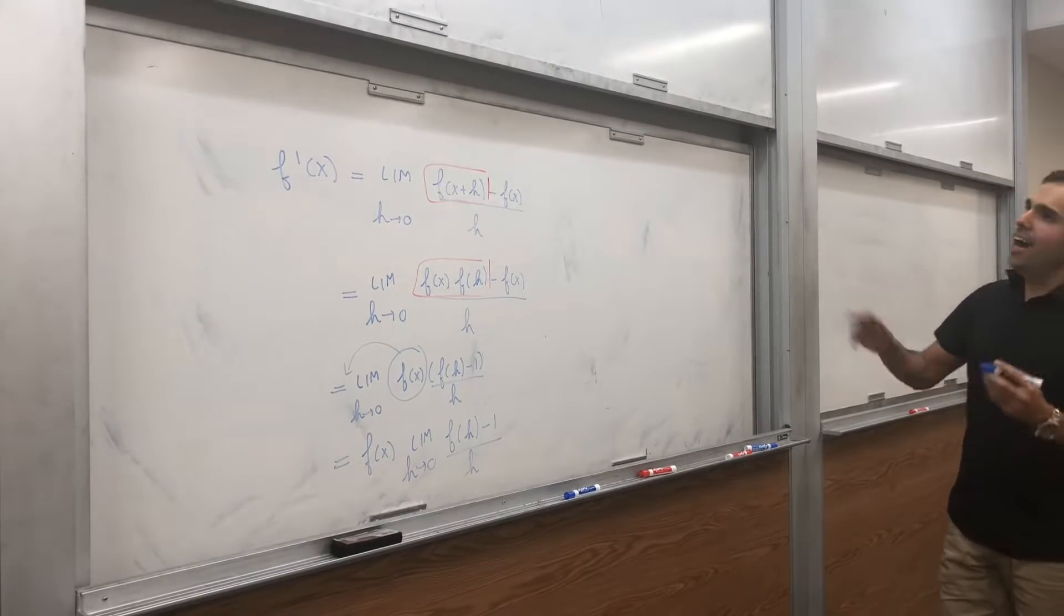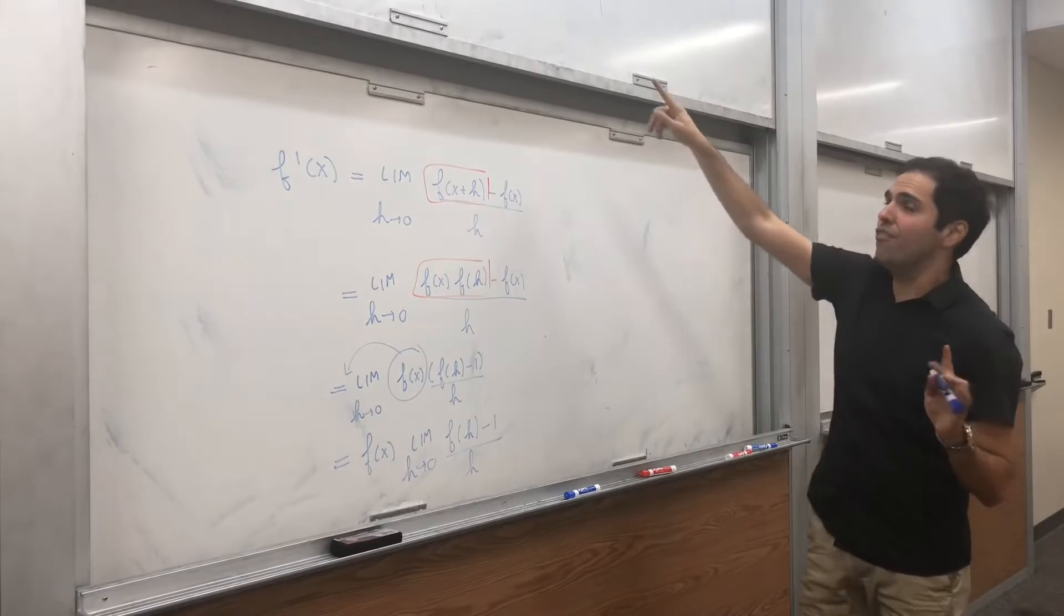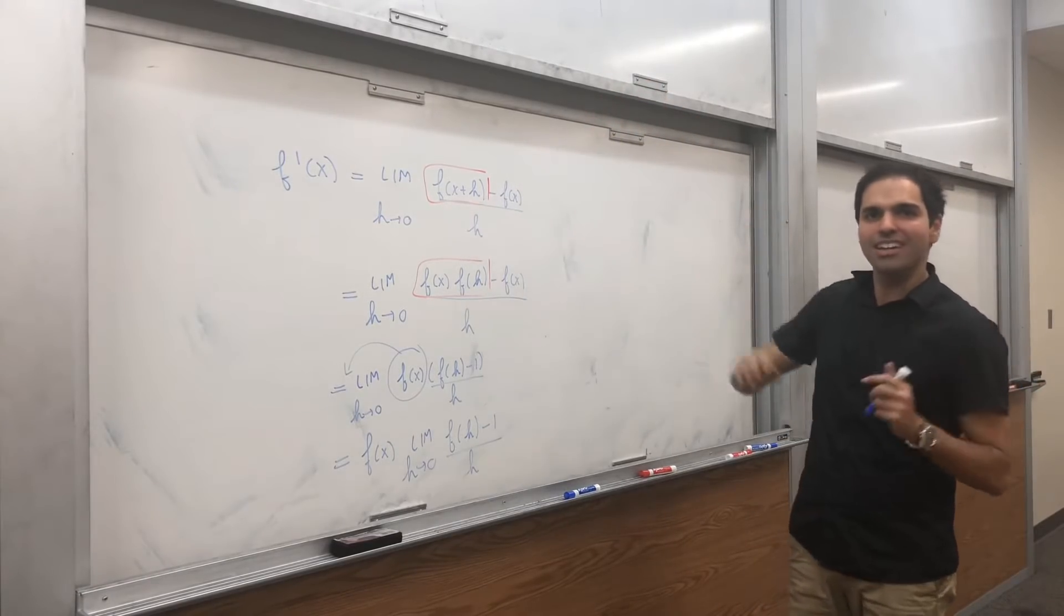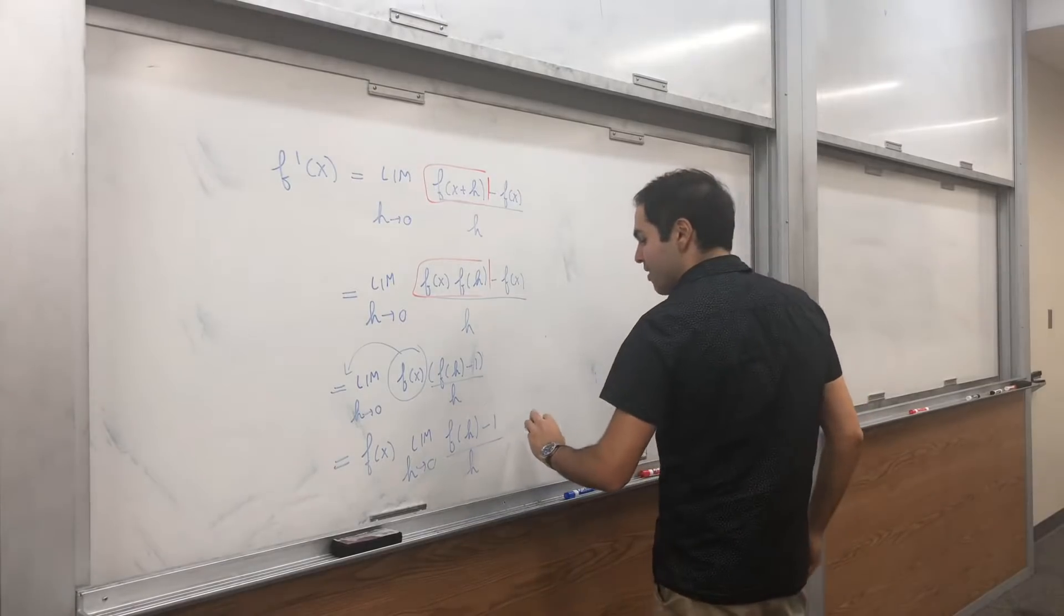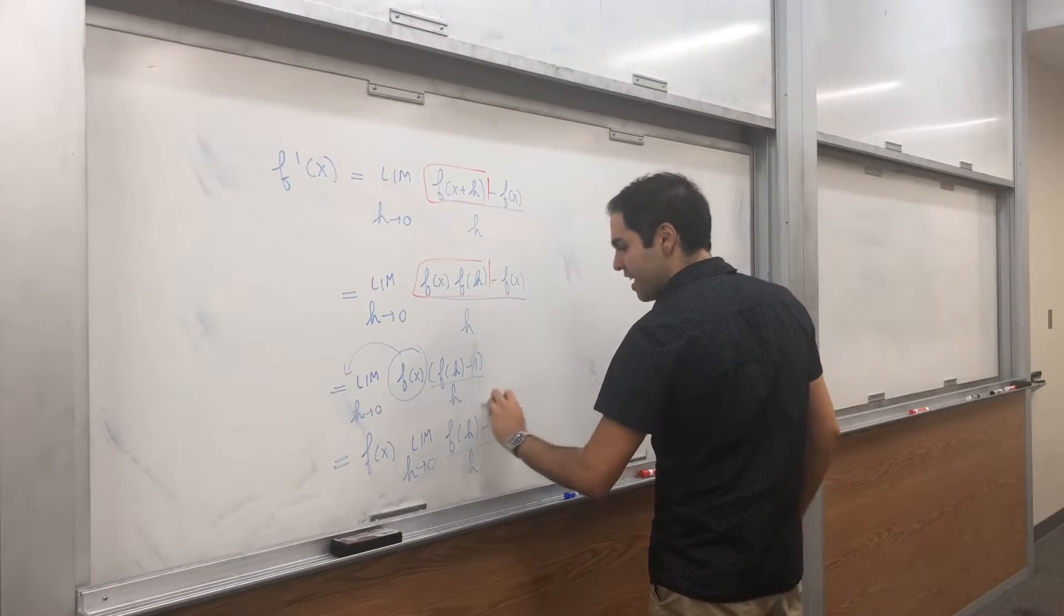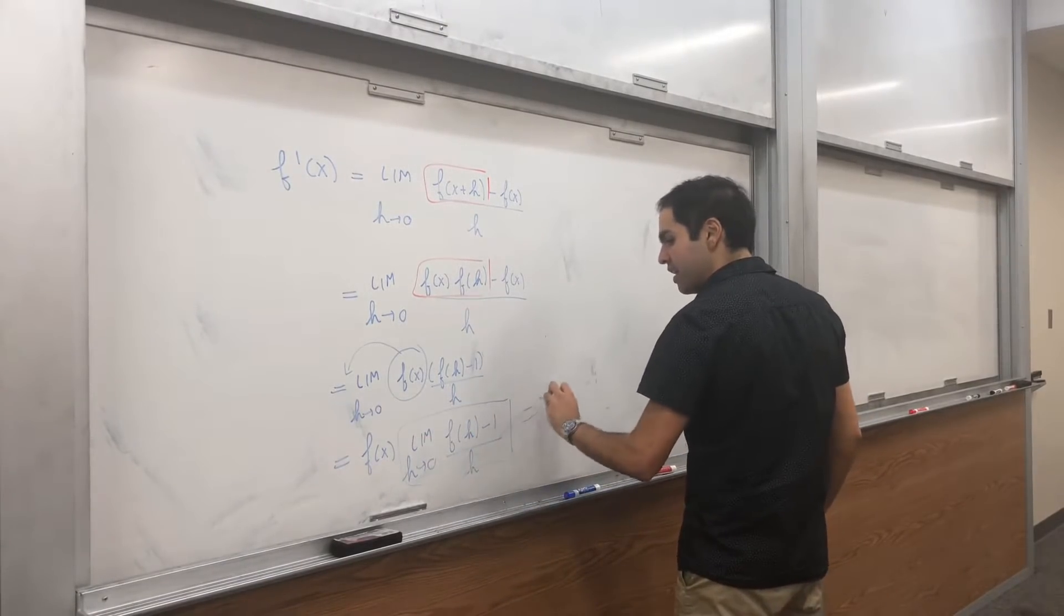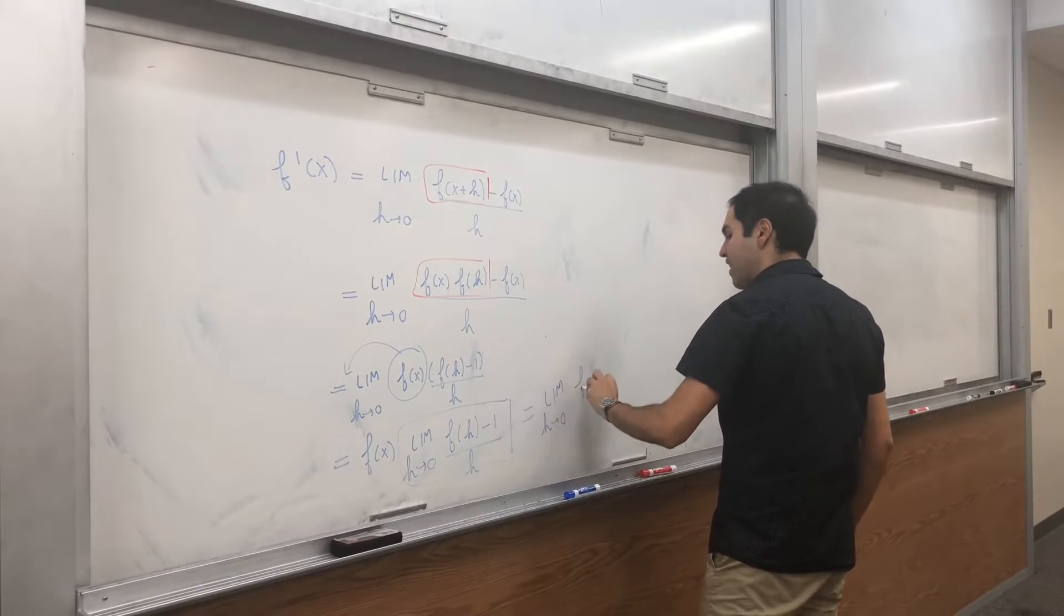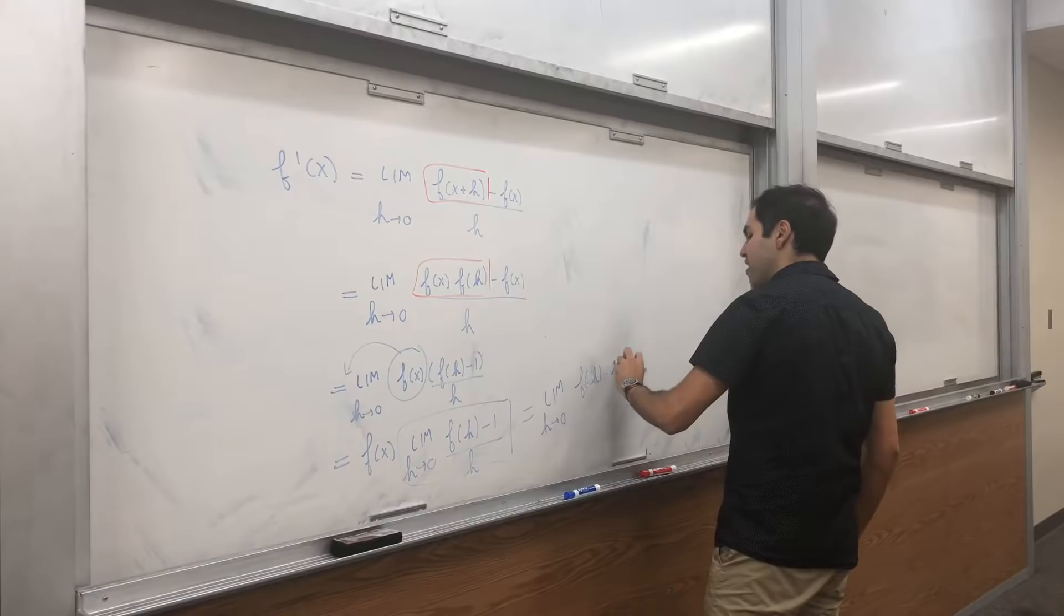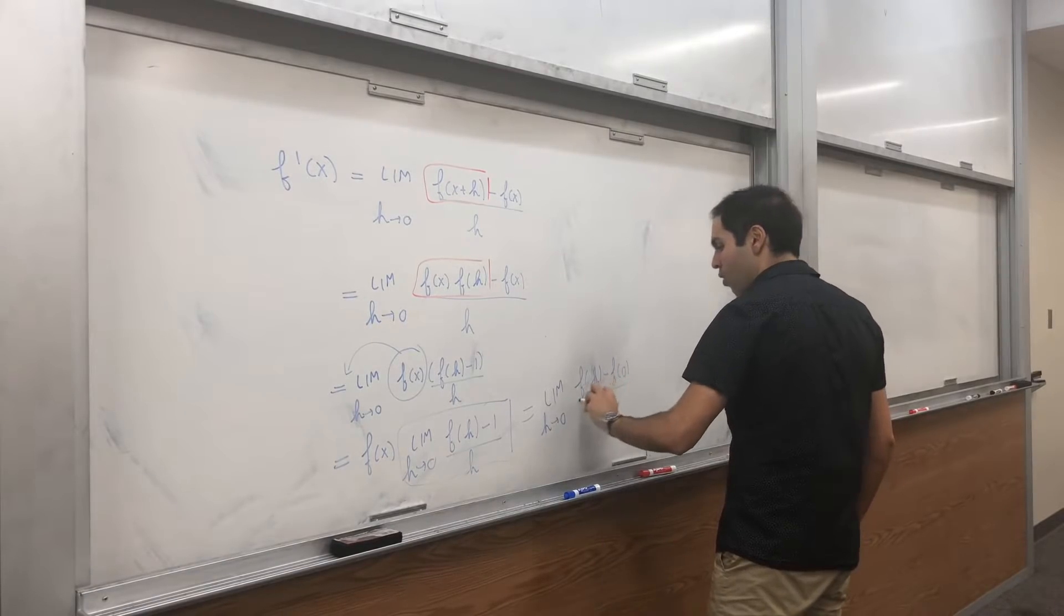And I guess just assume that f of 0 equals to 1, and I'll come back to that later. Then in particular this thing just becomes that the limit as h goes to 0 of f of h minus f of 0 over h.